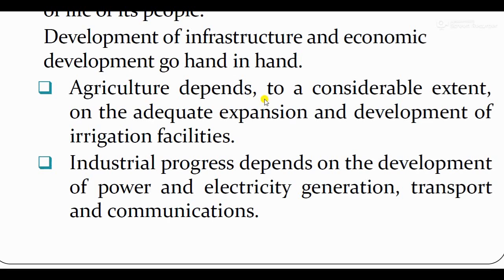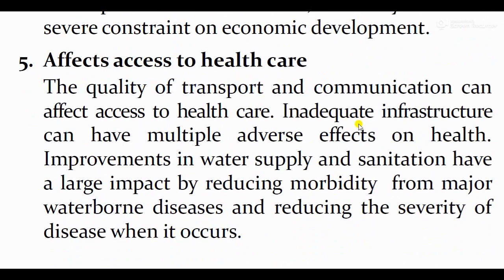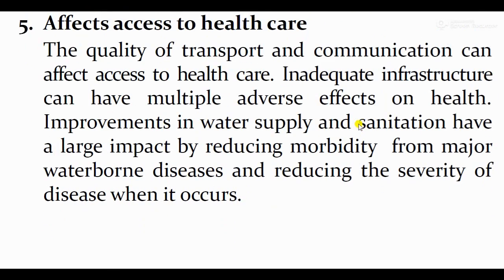Agriculture depends to a considerable extent on the adequate expansion and development of irrigation facilities — खेती बढ़ाने के लिए irrigation facility और पानी की व्यवस्था अच्छी होनी चाहिए। Industrial progress depends on the development of power, electricity generation, transport, and communication. Industry की growth के लिए बिजली, गाड़ियां और communication system होना जरूरी है।